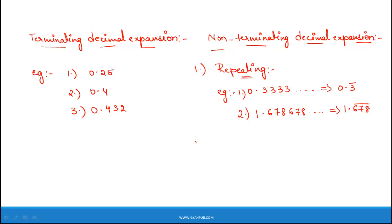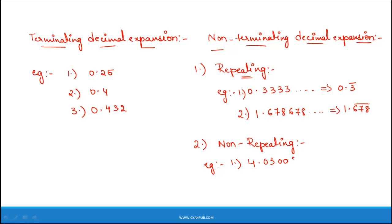Now let us look at another type of non-terminating decimal expansion — that is non-terminating and non-repeating. For example, 4.03, 0.03, 0.003 and so on. Here the decimal expansion is non-terminating and also non-repeating.